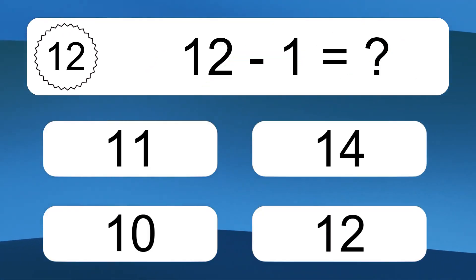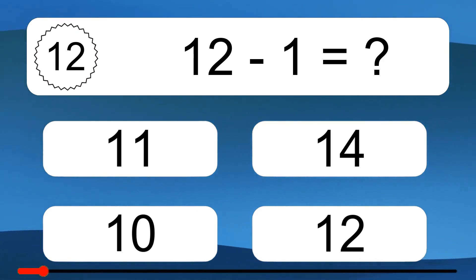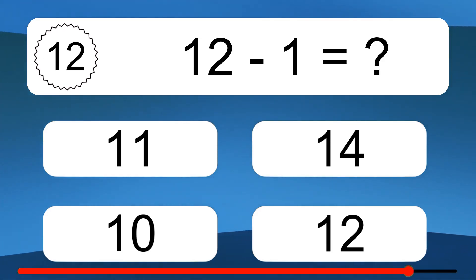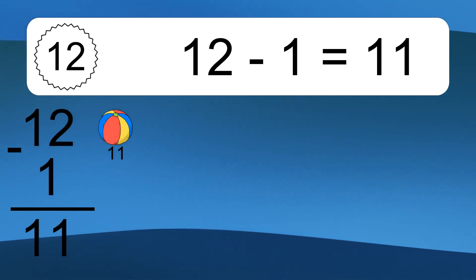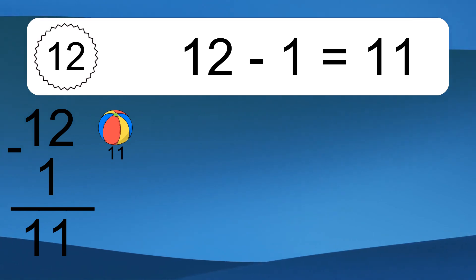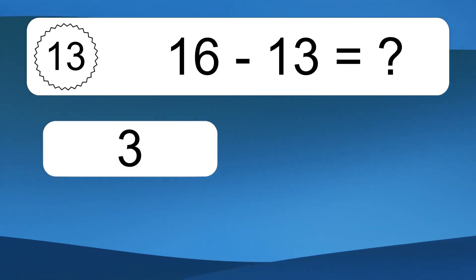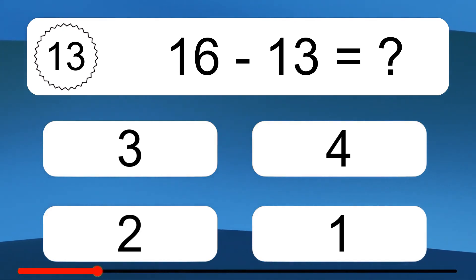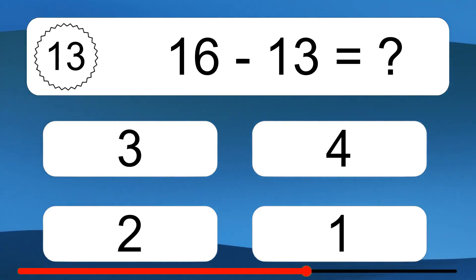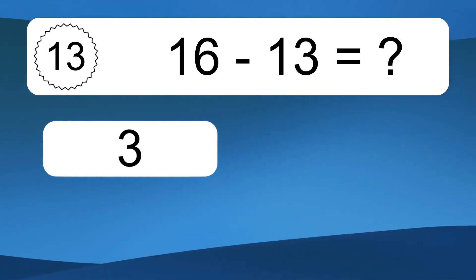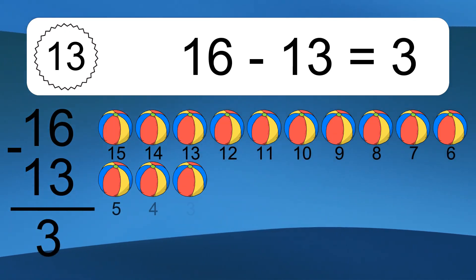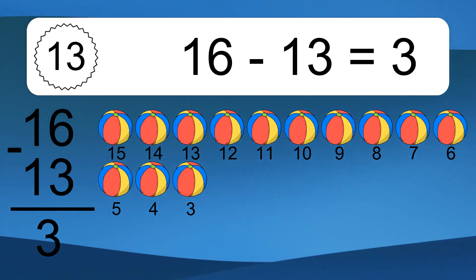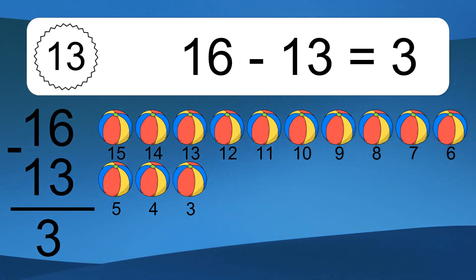12 minus 1 equals what? 12 minus 1 equals 11. Let's count it: 11. 16 minus 13 equals what? 16 minus 13 equals 3. Let's count it: 15, 14, 13, 12, 11, 10, 9, 8, 7, 6, 5, 4, 3.